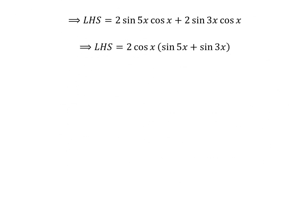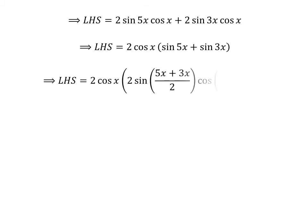Taking out the common factor 2 cos(x), and again applying the identity, gives us the left hand side equal to 2 times cosine of x times 2 times sine of (5x plus 3x)/2 times cosine of (5x minus 3x)/2.